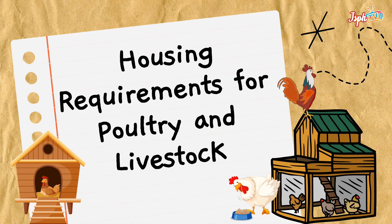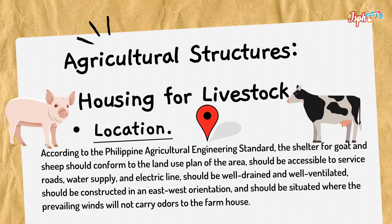First, the housing requirements for poultry and livestock. For agricultural structures, regarding the housing for livestock location, according to the Philippine Agricultural Engineering Standard, the shelter for goat and sheep should conform to the land use plan of the area, should be accessible to service roads, water supply, and electric line, should be well drained and well ventilated, should be constructed in an east-west orientation, and should be situated where the prevailing winds will not carry odors to the farmhouse.